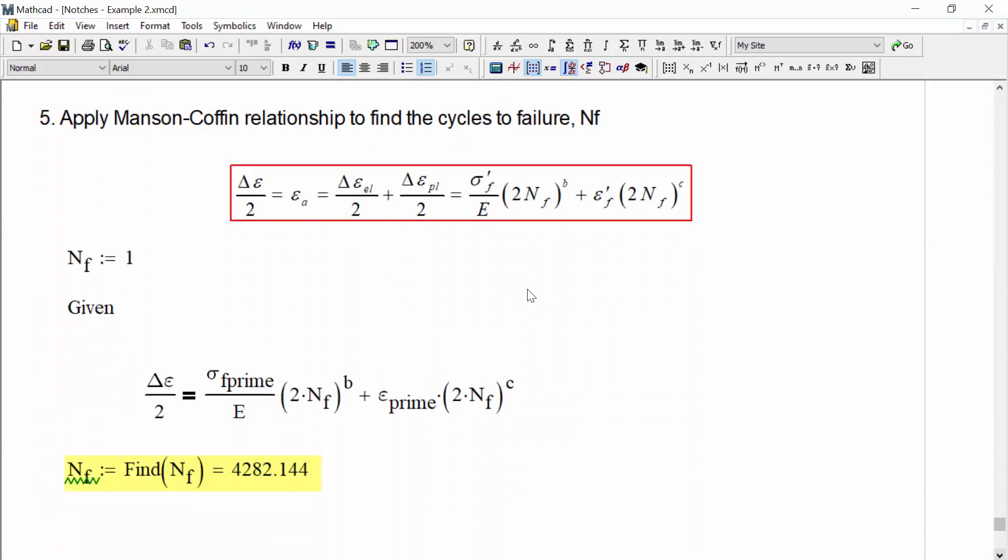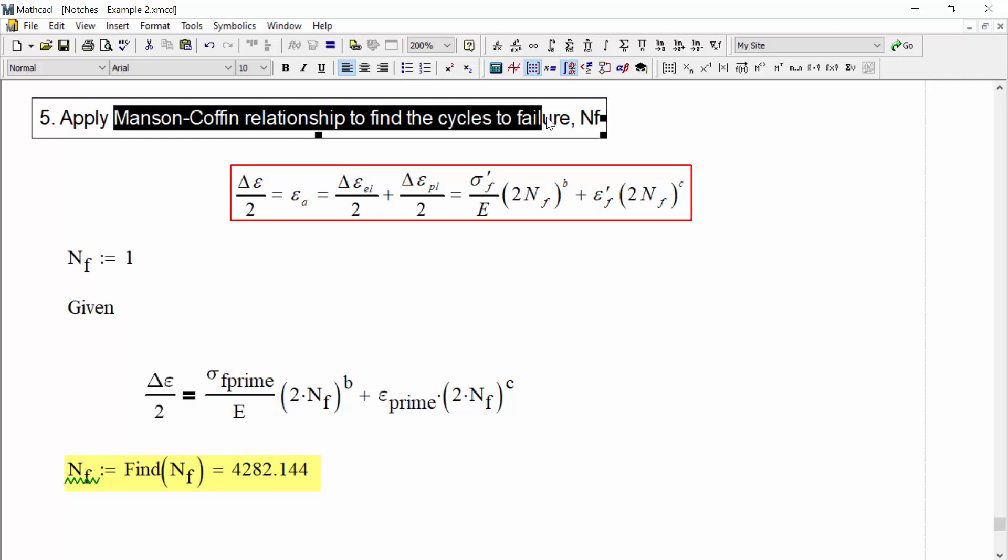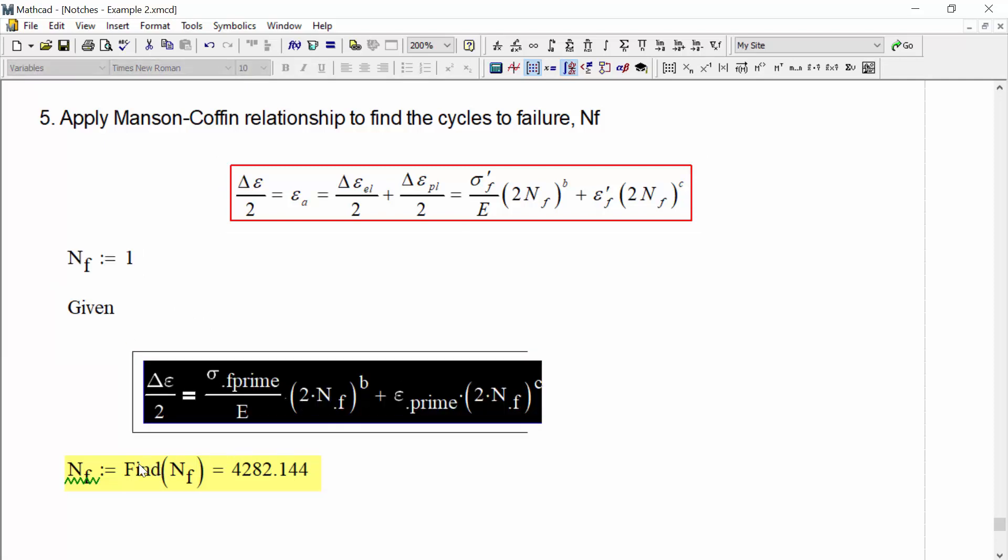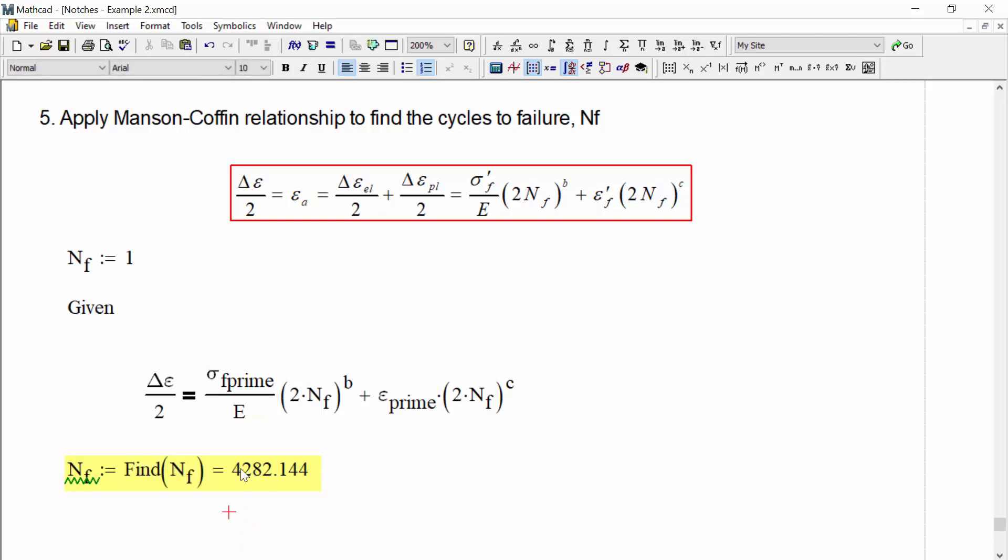Now, our last step in this problem is we want to find cycles to failure. In this problem, we're going to apply the Manson-Coffin relationship to finding the cyclic fatigue failure. And that is this following equation where the strain amplitude or the strain range divided by 2 is equal to sigma f prime over E times 2 times NF to the power B plus eta f prime times 2 times NF to the power C. We're going to use a solve block here. So we're going to initialize the cycles of failure as 1. We're going to give it this equation and we're going to ask it to find what is the correct value. And we find the cycles to failure is equal to 44,283 cycles to failure.